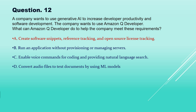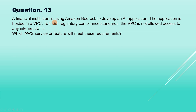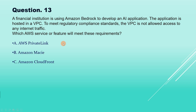Now question number 13. A financial institution is using Amazon Bedrock to develop an AI application. The application is hosted in a VPC. To meet regulatory compliance standards, the VPC is not allowed to access any internet traffic. Which AWS service or feature will meet these requirements? The options are: AWS PrivateLink, Amazon CloudFront, internet gateway.